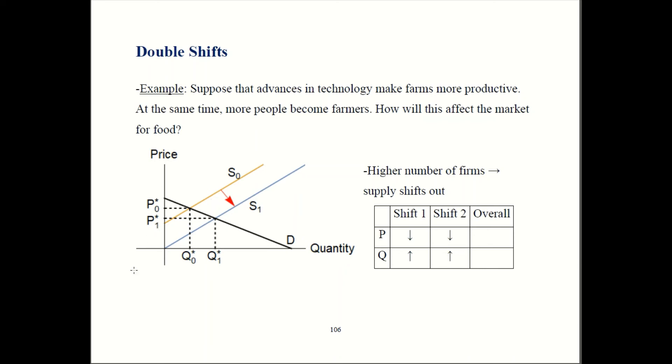What does that do to our equilibrium? In the beginning, we're over here, old supply meets demand, so we have this price, P0, and that quantity, Q0.